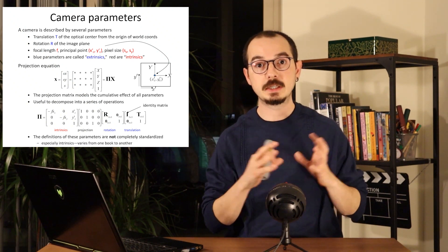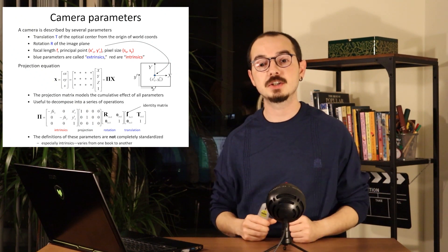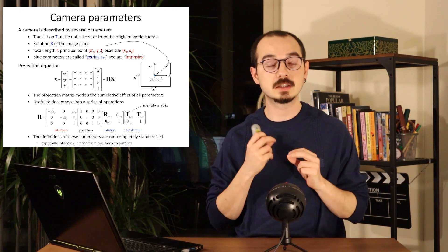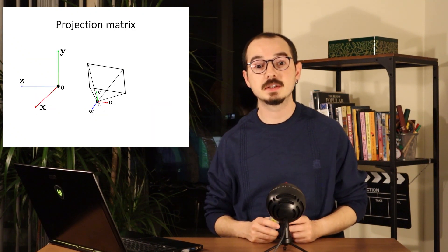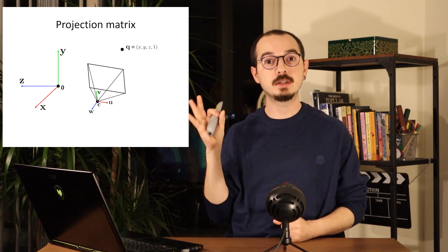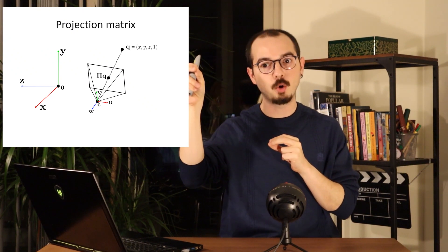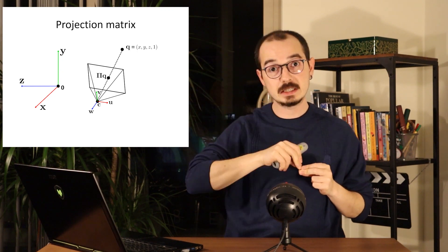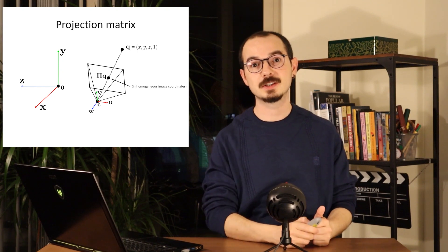When you look at this decomposition of the pi matrix, you might see slightly different representations. For example, the translation T can also be written as R times C in some notations. In a simpler way, we have a point in world coordinates and we are drawing a line from this point to our center of projection, looking at where this line crosses our image plane — all in homogeneous image coordinates.